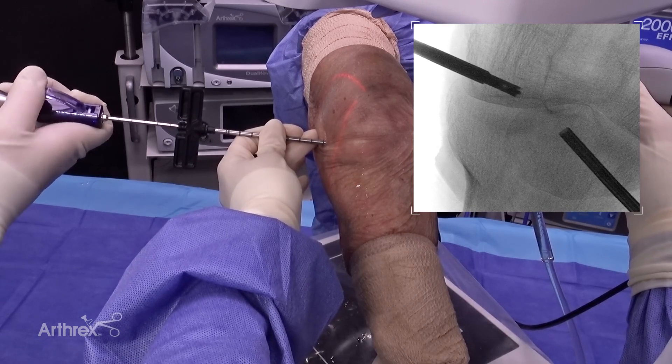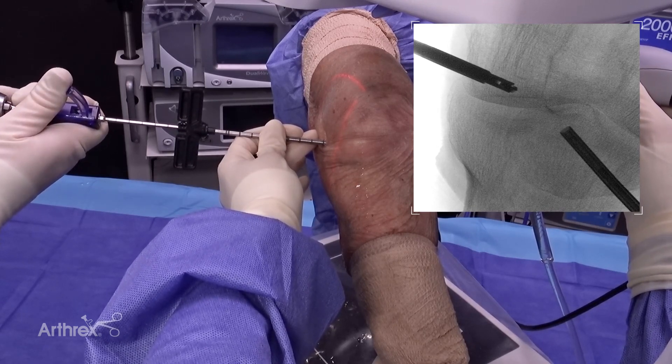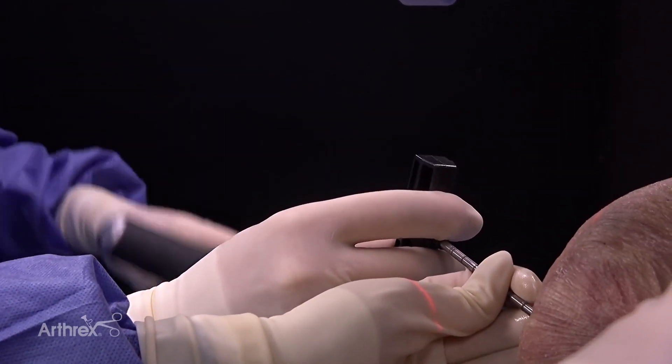And then once we're done, you can just advance that in a little bit, straighten out the flip cutter. And you can see that we've not touched the articular cartilage. We've had the arthroscope in the whole time. And then we can just take this out like that.